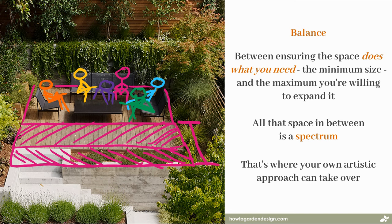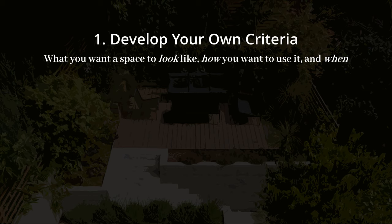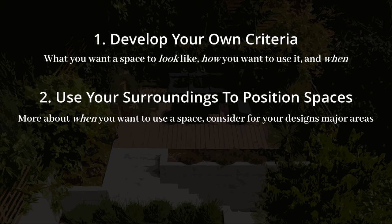I hope you found this little exploration useful. Let's quickly touch on the three principles we went through and how you can apply them to your own designs. Number one: develop your own criteria — what you want the space to look like, how you want to use it, and when. You don't need to know all of these right at the start. You can chop and change your criteria as you go when you're finding more examples or adjusting how you want to use the space. Two: use your surroundings to position a space in your design. This is generally more about when you want to use the space and is most helpful for the major areas of your design. You will have clashes where certain spots are good for multiple activities, and if that's the case you'll need to combine the areas or prioritize which one goes where.